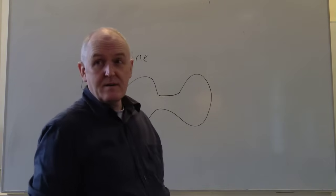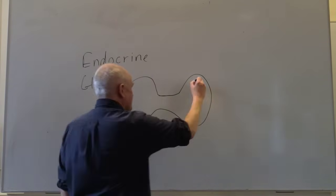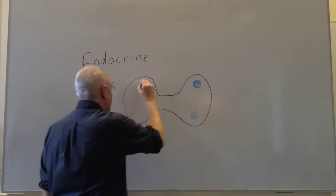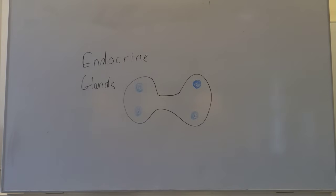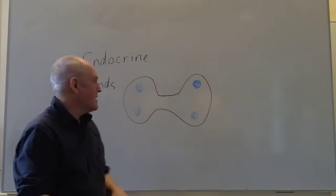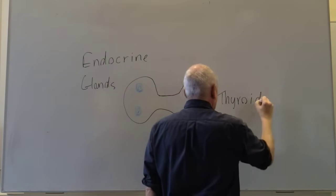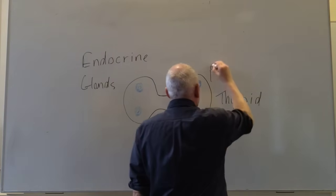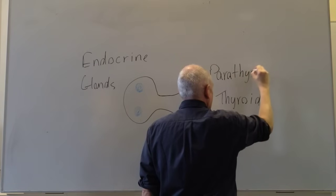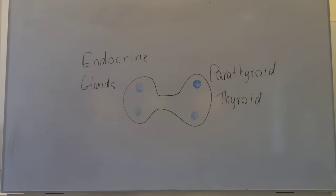The thyroid gland has a lobe on either side joined by an isthmus in the middle. Within each lobe of the thyroid gland, at the back, there are four smaller glands — two in each lobe, one in each part of each lobe towards the back. The whole structure is called the thyroid gland, and these four smaller glands embedded in it are called the parathyroid glands.